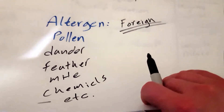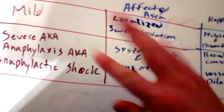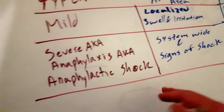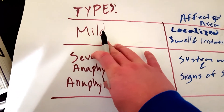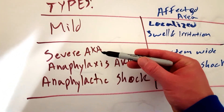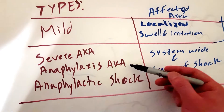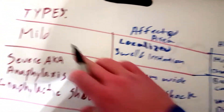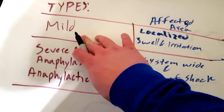There are two types of allergic reactions: you have your mild allergic reactions and then you have your severe allergic reactions, also known as anaphylaxis or anaphylactic shock.